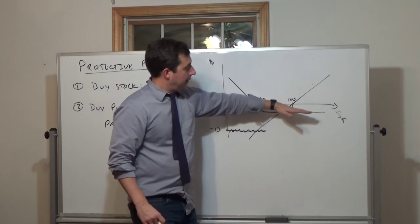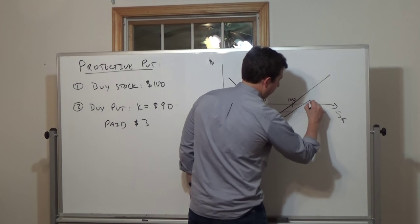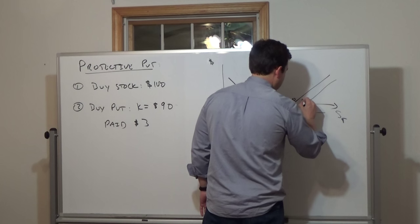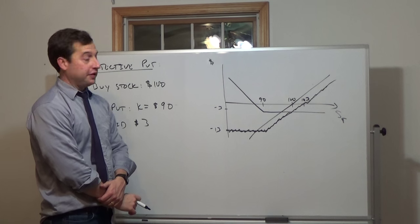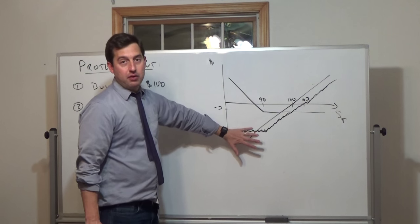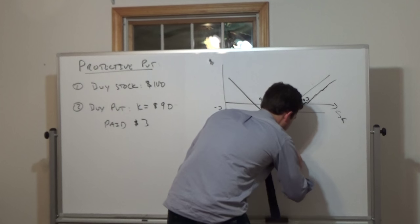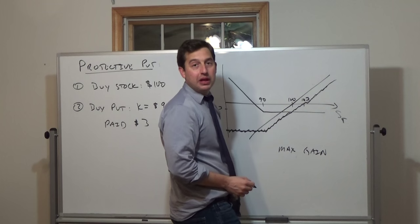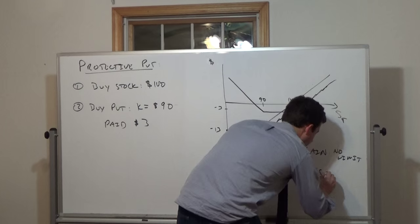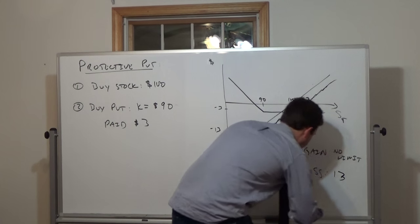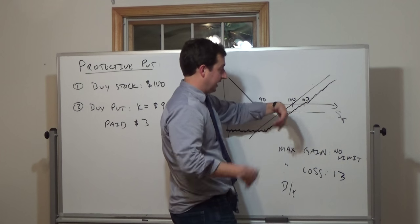Above $90, the option P&L doesn't change, but the stock does, so the combined position goes up along the stock line from that point. We break even at $103. Max gain has no limit. Max loss is $13. We break even when the underlying stock price at expiration of the option is $103.